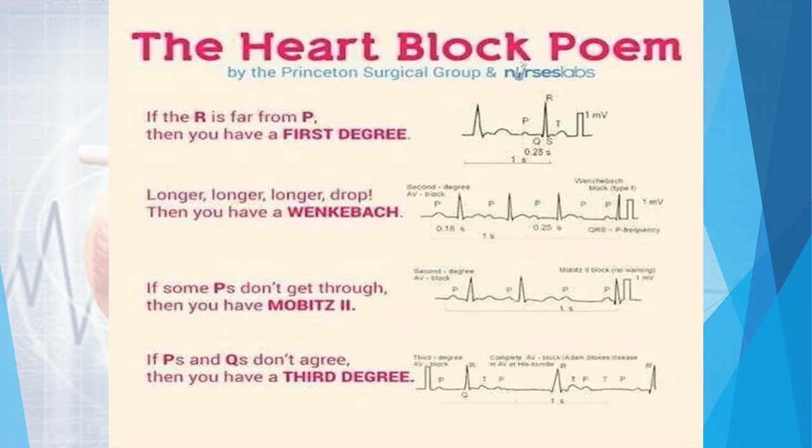Here is a heart block mnemonic poem to correlate with the ECG findings: 'If the R is far from P, then you have first degree heart block. Longer, longer, longer, longer, drop — then you have Wenckebach, otherwise Mobitz type 1, second degree heart block. If some P's don't get through, then you have Mobitz type 2. If P's and Q's don't agree, then you have third degree heart block — complete heart block.'